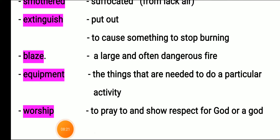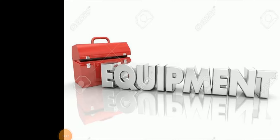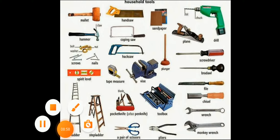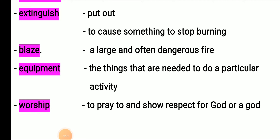Blaze is related to an out-of-control fire. Next: equipment means the things that are needed to do a particular activity — tools needed for particular activities. Suppose we need to open a car; we need different equipment. Here you can find household tools — saw, hand saw, and others. These are all examples of equipment.